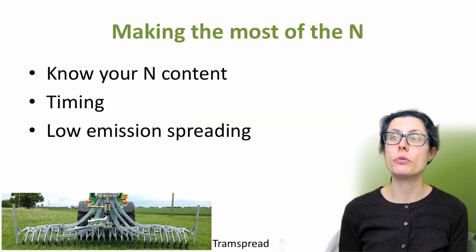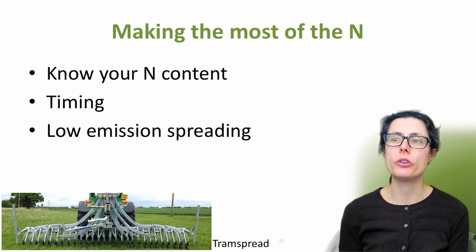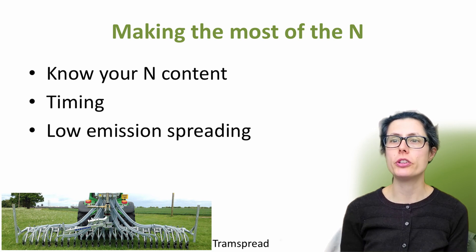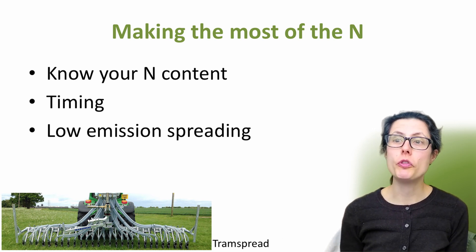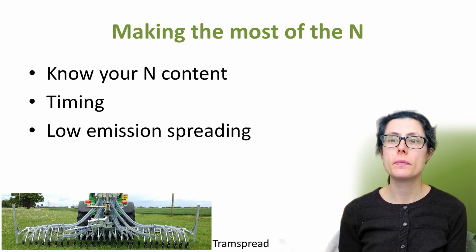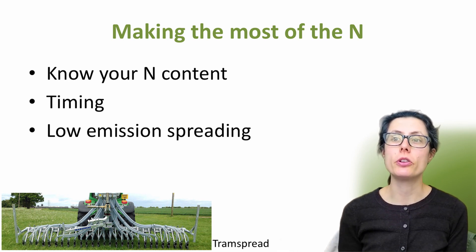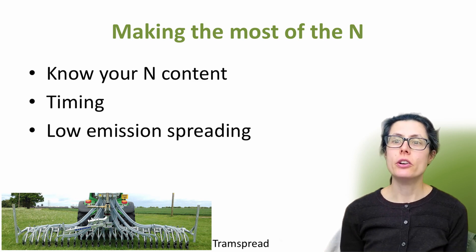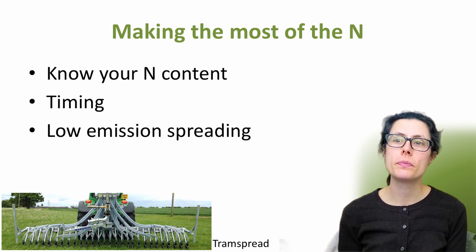As a reminder, ammonia emissions and therefore nitrogen losses occur during housing, storage and spreading, whenever the organic manures are in contact with the air. It's important to know how much nitrogen and what type of nitrogen is in your organic manure, be it slurry, solid manure, compost, digestate or biosolids, to be sure you feed your crop what they need and when they need it. It's also important to think about the organic nitrogen content, which will be slowly released over time, especially in solid organic manures, feeding the crops in small amounts over several years at least. Consider the best application times to benefit the crops the most, and think about low emission spreading techniques to keep the nitrogen in the soil.